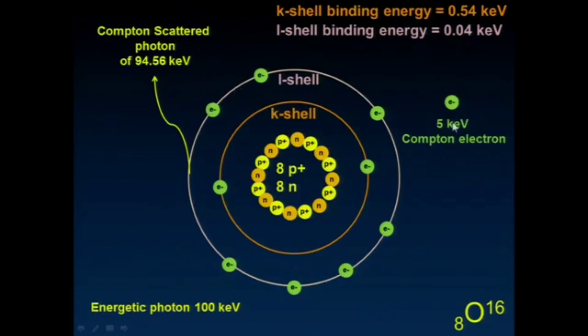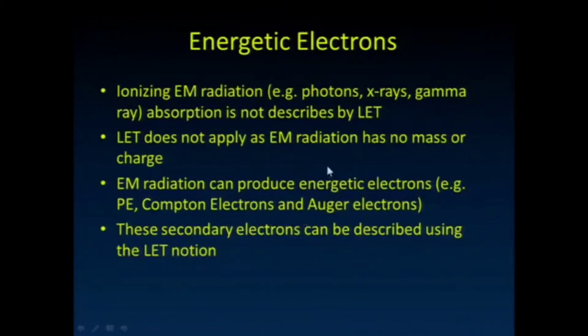And so we then get this lower energy 5 keV Compton electron here. So part of that dose was imparted to it there.